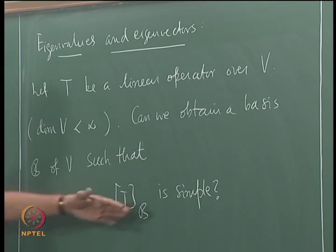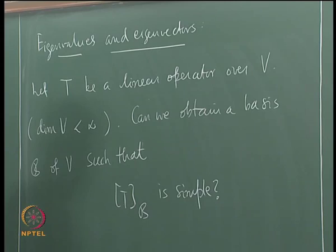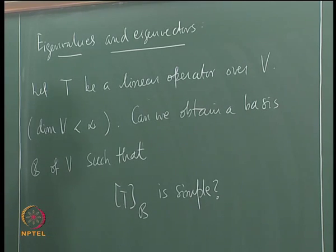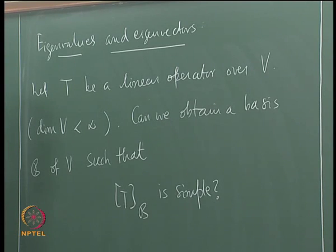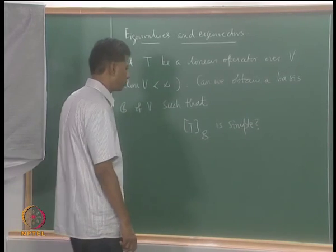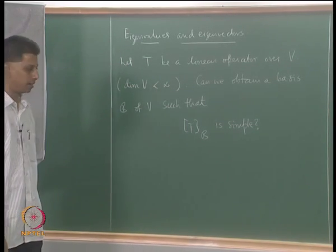We need to interpret the word 'simple' and make it precise. The simplest matrices apart from scalar matrices — a matrix is called a scalar matrix if it is k times identity. The next simplest is the class of diagonal matrices. So we ask: can we find a basis B such that the matrix of T is diagonal?